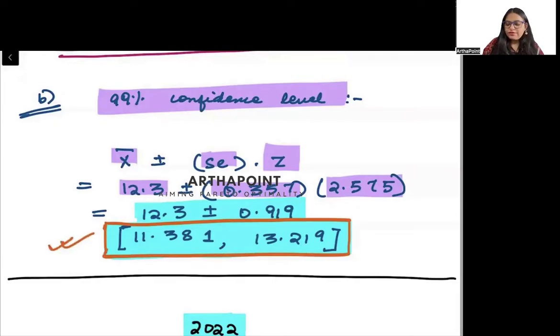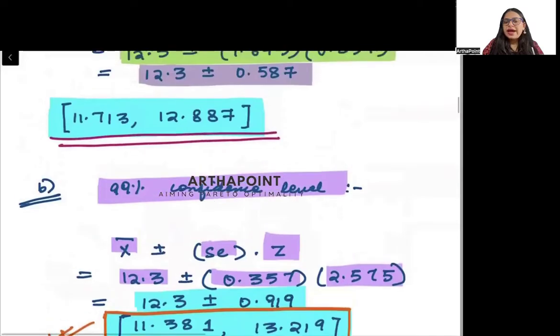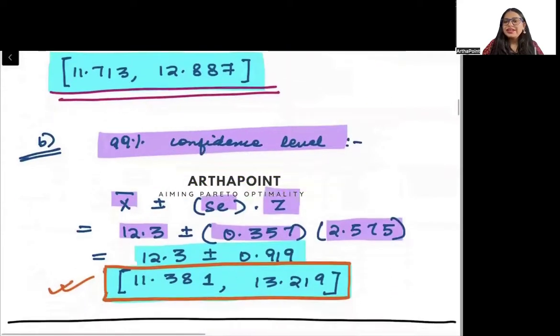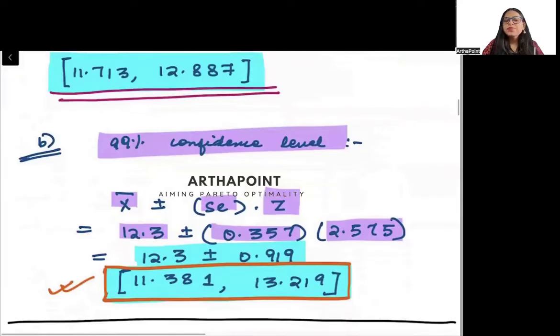So your confidence level will be 11.381 to 13.219. Note that as you go from 90% confidence interval to 99% confidence interval, you see that there is an increase in the width of the confidence interval. Just remember this, that as the value of confidence level is increasing, the width is increasing. Rather than decreasing, the width is increasing. Please remember this point.